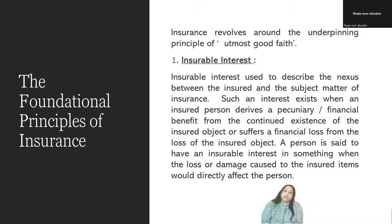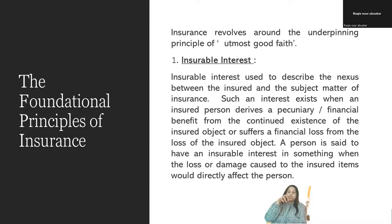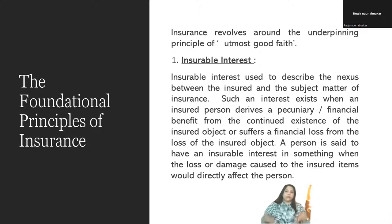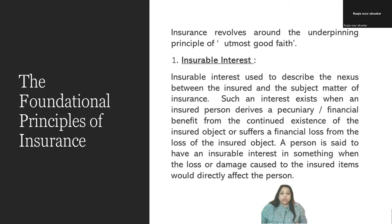What is insurable interest? Insurable interest is used to describe the nexus or the connection between the insured and the subject matter of the insurance — that is, who is insuring it and what is the connection with the subject matter. Like for example, there is a car — A owns a car. Who has to insure the car is A; the insurance policy has to be in the name of A. Suppose A is not available and B insures the car — on whom does insurable interest lie? B is just the friend of A, but who is the owner of the car? So insurable interest — the owner of the car has an insurable interest because he's the owner, he's paid the price for it. And in case of loss, who suffers the loss? It's the owner.